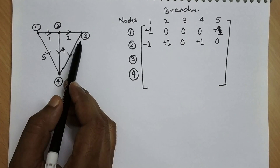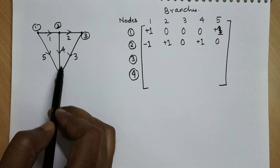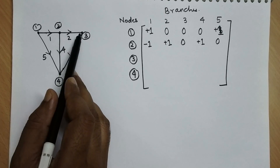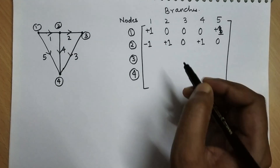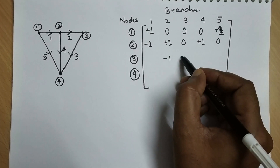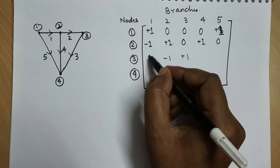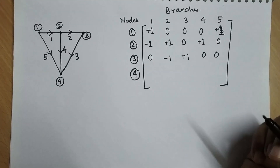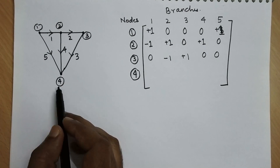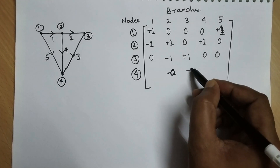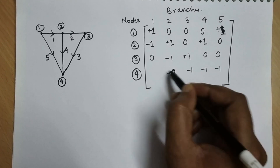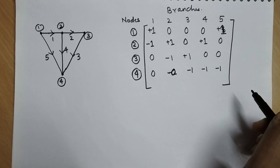For node three, only two branches are connected: branch two is incoming, so minus one; branch three is outgoing, so plus one. Other branches are not connected to node three. For node four, branches three, four, and five are all incoming, so all three are minus one. Branches one and two are not connected, so they become zero.